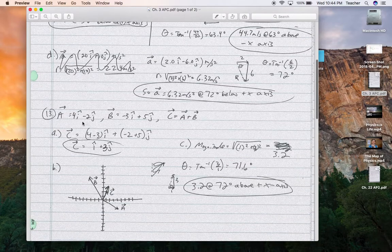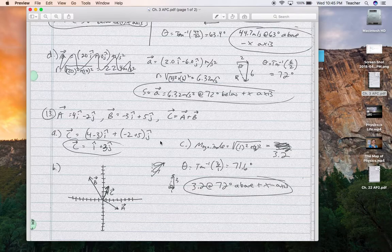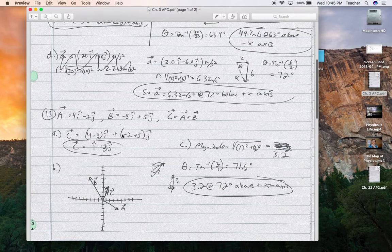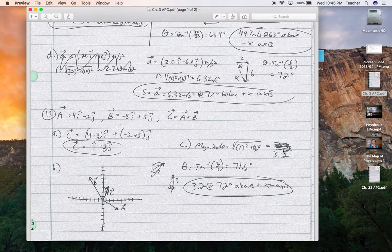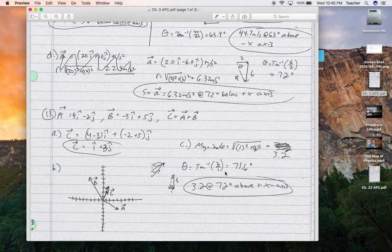For 13, you're given vectors A and B, and you want to find C. So we group the terms. So C is 4 minus 3i hat and negative 2 plus 5j hat. So that's 1i hat and positive 3j hat would be equal to C. I don't know why I scribbled out the same answer that I ended up getting over here. So the magnitude is 3.2. The angle about 72 degrees, and that is above the x axis.